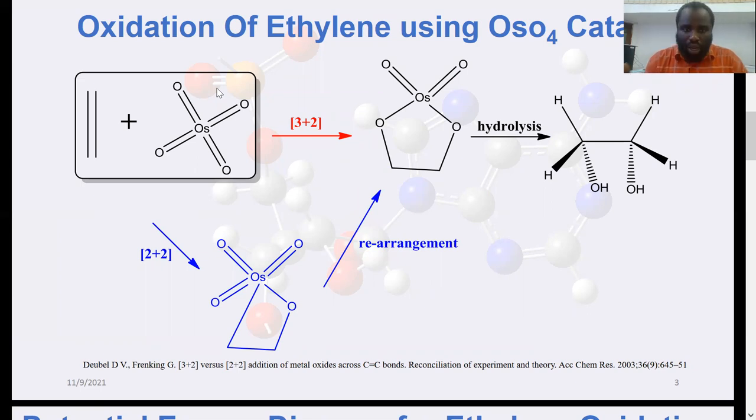The issue about this reaction was with its mechanistic details. Initial proposals suggested that the olefinic moiety adds across the O-Os-O functionality in a 3+2 manner to form a dioxylate before undergoing hydrolysis to form diols.